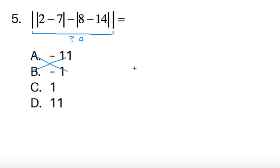Everything is just determining, it's either C or D. So, 2 minus 7, that gives me negative 5. 8 minus 14, that gives me negative 6. So, we have these two.